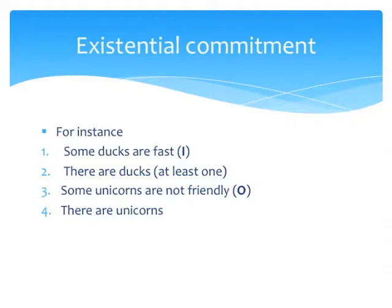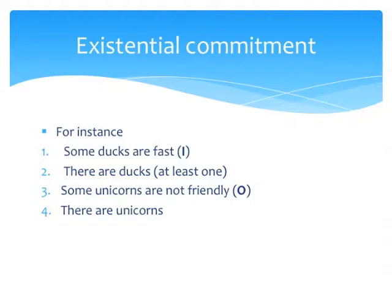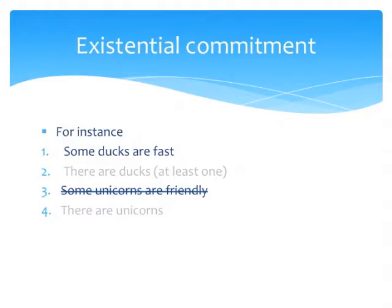For instance, take a proposition of the form I, such as 'some dogs are fast.' Well, that implies that there are dogs. And that is because if sentence one is true, then sentence two must be true. Likewise, sentence three implies or entails sentence four. Because if it is true that some unicorns are not friendly, then there must be unicorns. And of course, that means that although sentence one can be true, sentence three can't be true — because there are no unicorns. So the truth of sentence three requires the existence of unicorns, that is, the class associated with the subject term. Since there are no unicorns, sentence three can't be true.